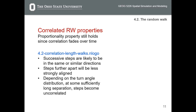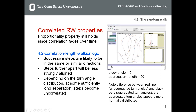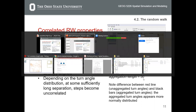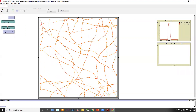After 200 steps, the direction has changed a lot. Depending on the turn angle distribution, at some sufficiently long separation, steps become uncorrelated. Here I'm going to show you this model with standard deviation angle 5 and aggregation length 50. Let me run this first — set up.